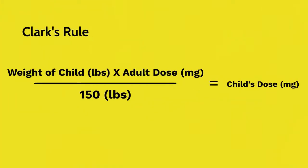Starting with Clark's Rule, the equation is the weight of the child in pounds times the adult dose in milligrams divided by the average adult weight of 150 pounds. Since pounds appear in both the numerator and denominator, they cancel out, leaving milligrams as the final units. Essentially, this is a proportion of the child's weight over the average adult weight times the typical adult dose to give the relatively scaled child's dose.